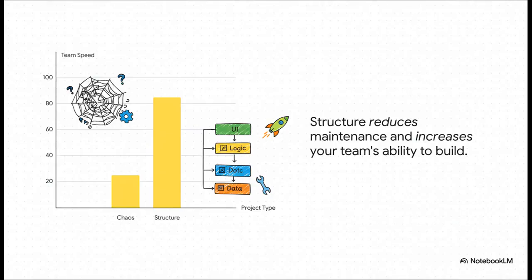This chart just drives the point home perfectly. With a chaotic system, your team is spending most of its time on maintenance, just putting out fires, and their speed is super slow. But with a solid structure, maintenance effort just plummets. And your team's velocity, their ability to build new cool stuff, it goes way, way up.